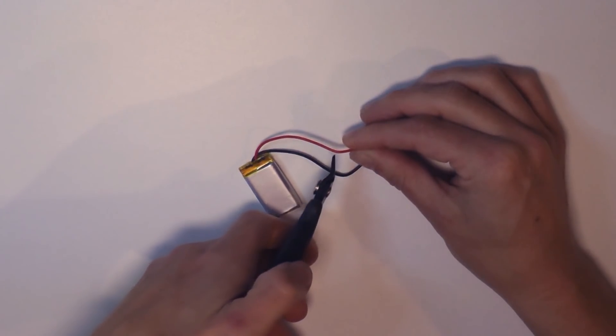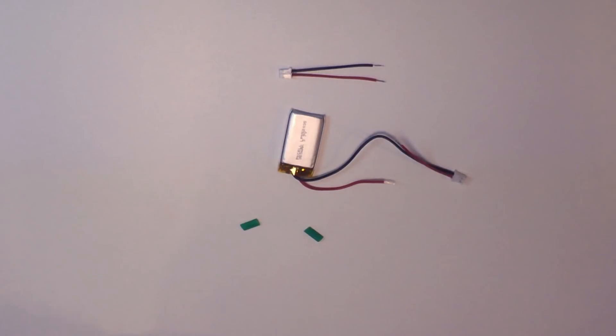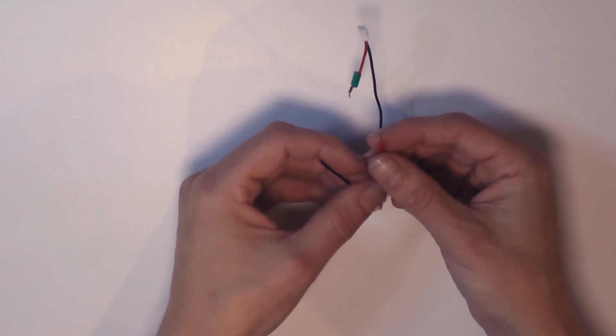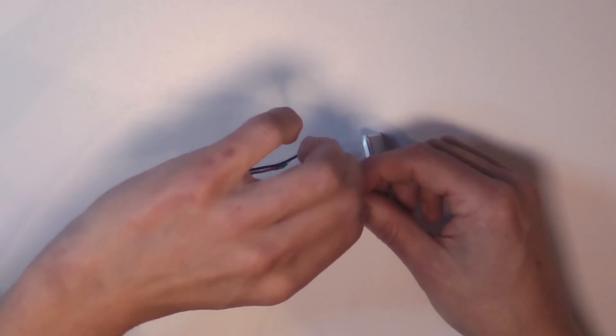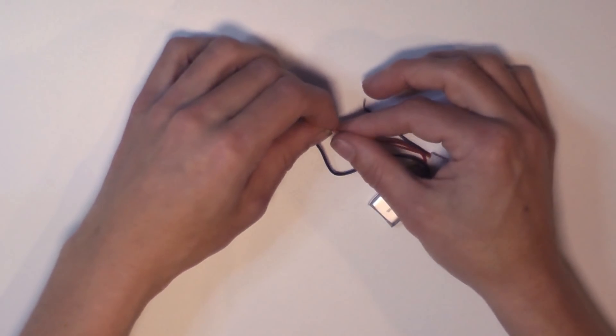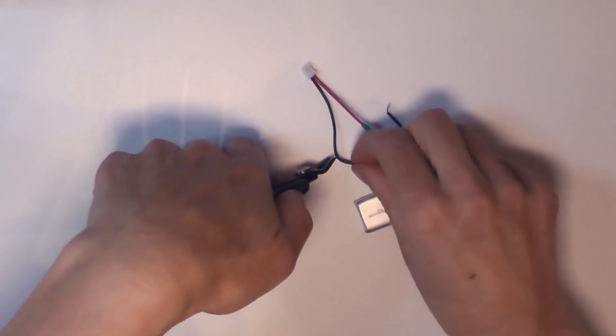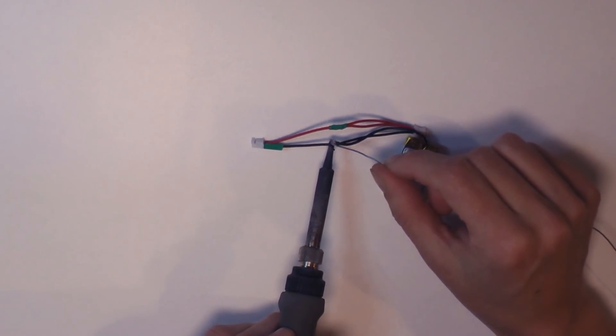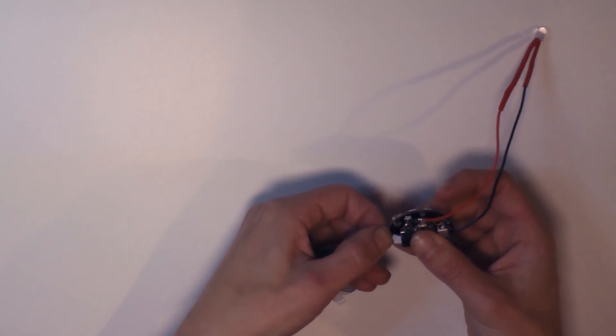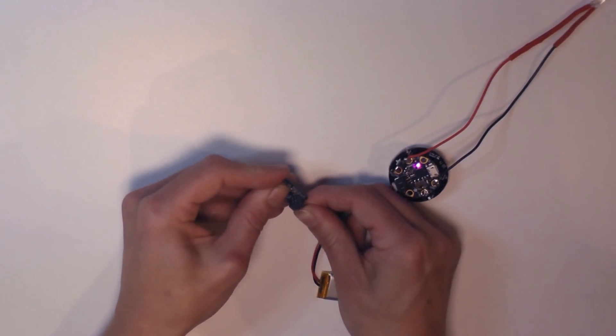To add charging capabilities, carefully cut the red wire of your battery lead and solder on a second JST connector. Repeat with the black wire. Plug your battery and charger into your Gemma and be sure everything works.